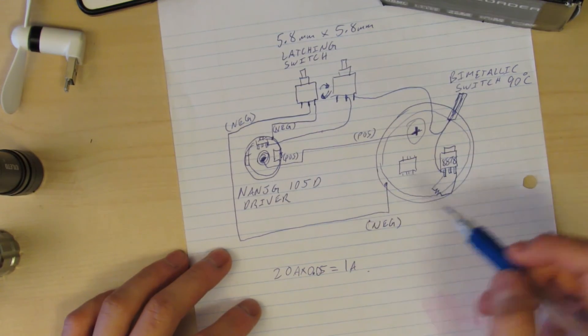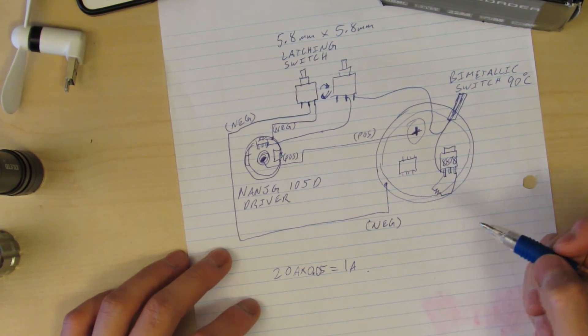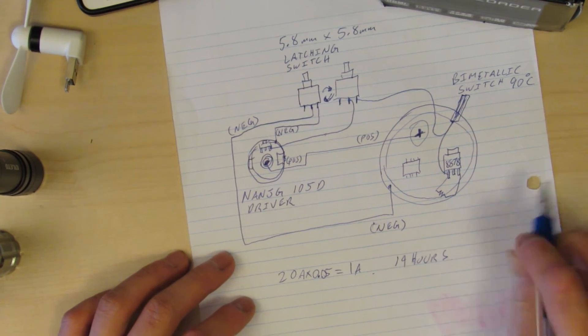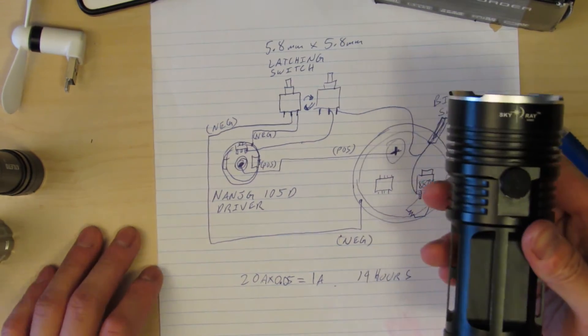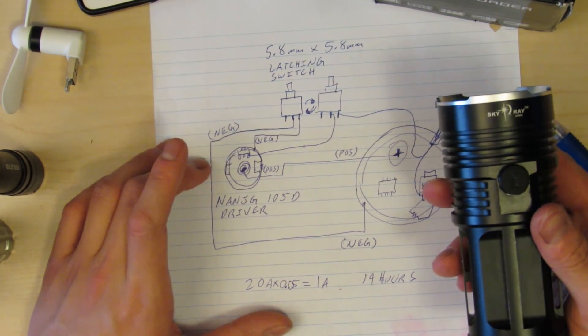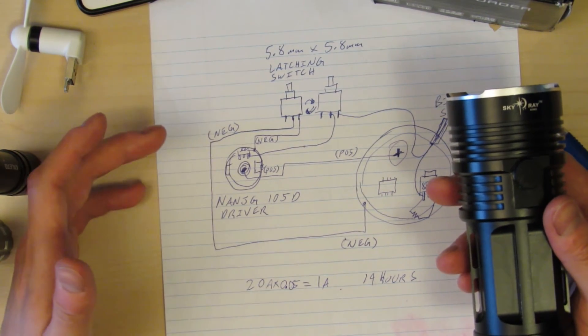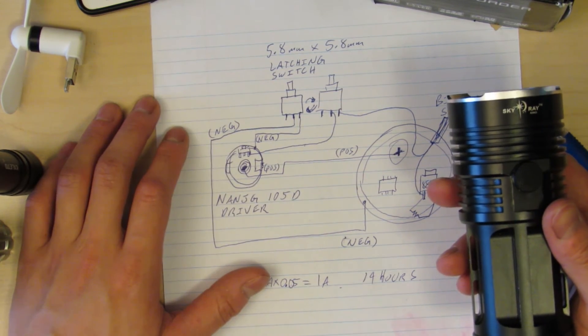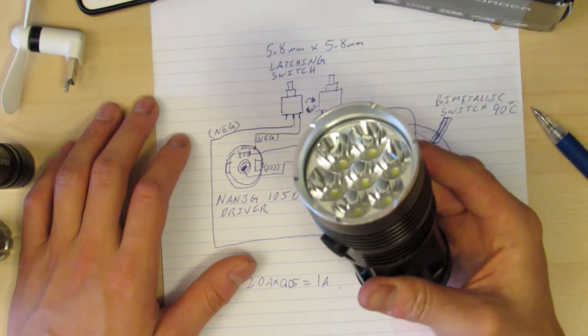Now we have 5% dimming, and at 5% dimming we have one amp being pulled, so this thing will last 14 hours on low. That's how you can add memory to your Skyray King. Add high pulse width modulation for the dimming, get 5% dimming, so you can get it up to 14 hours of runtime. That just makes it a much better light to use every day.